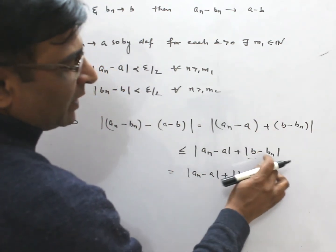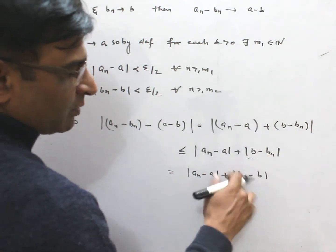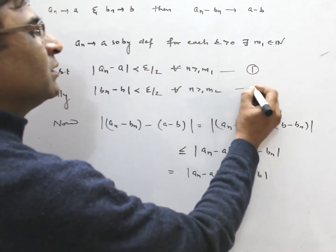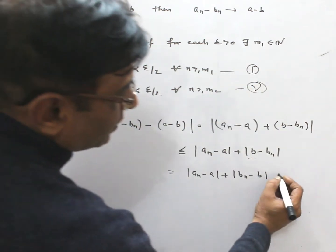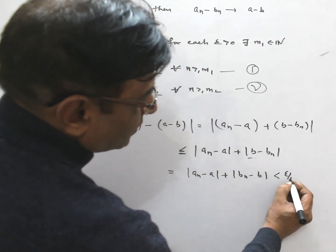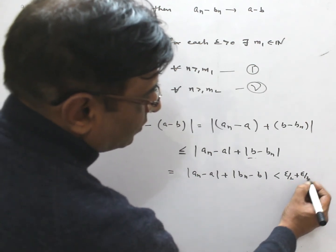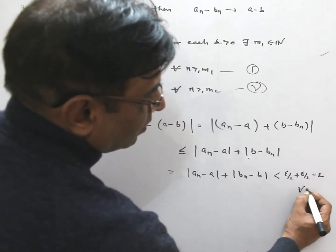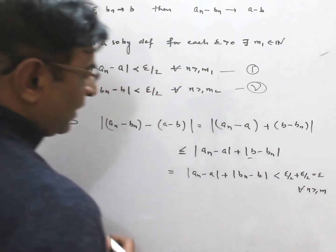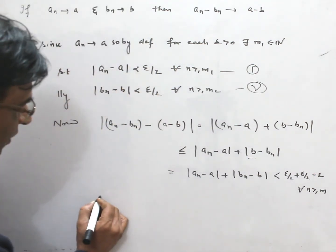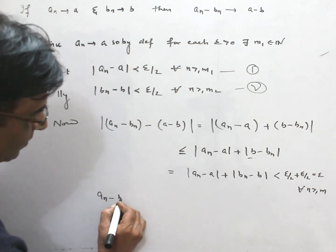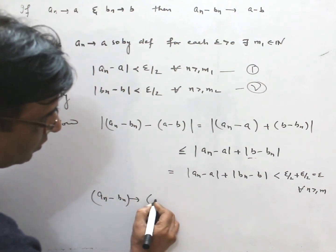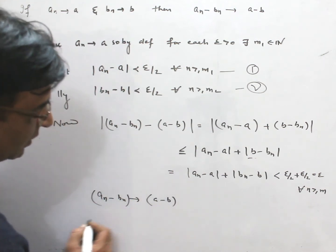Since |b - bₙ| equals |bₙ - b|, using bounds 1 and 2 this is less than epsilon/2 plus epsilon/2, which equals epsilon, for all n greater than M. We conclude that aₙ - bₙ converges to a - b.